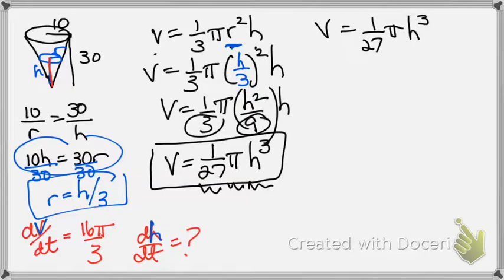Okay, so now we do our rates of change. Do the derivative of both sides. The derivative of V is dV/dt. And on the right side, this is a power rule. 3 times 1/27 is 3/27 or 1/9 π h² dh/dt.